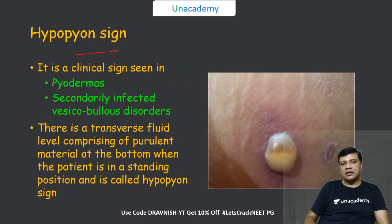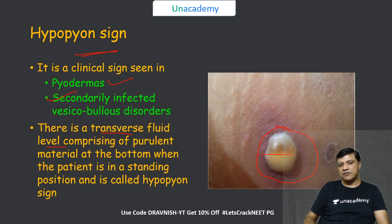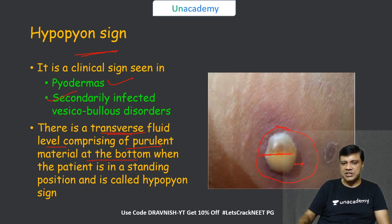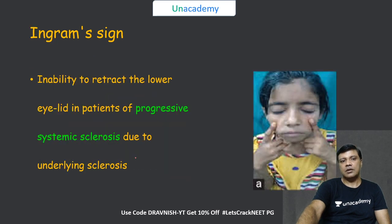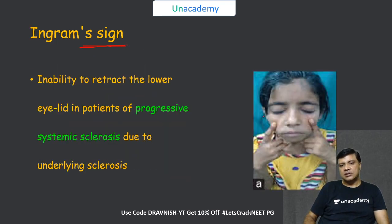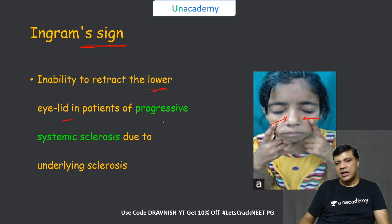The hypopyon sign is a feature of pyoderma and secondarily infected vesicopustular disorders, in which a transverse fluid level with purulent material at the base is seen when the patient stands. It can be seen in bullous impetigo and secondarily infected vesicobullous disorders. The Ingram sign is the inability to retract the lower eyelids in patients with progressive systemic sclerosis, due to sclerosis of the underlying skin.